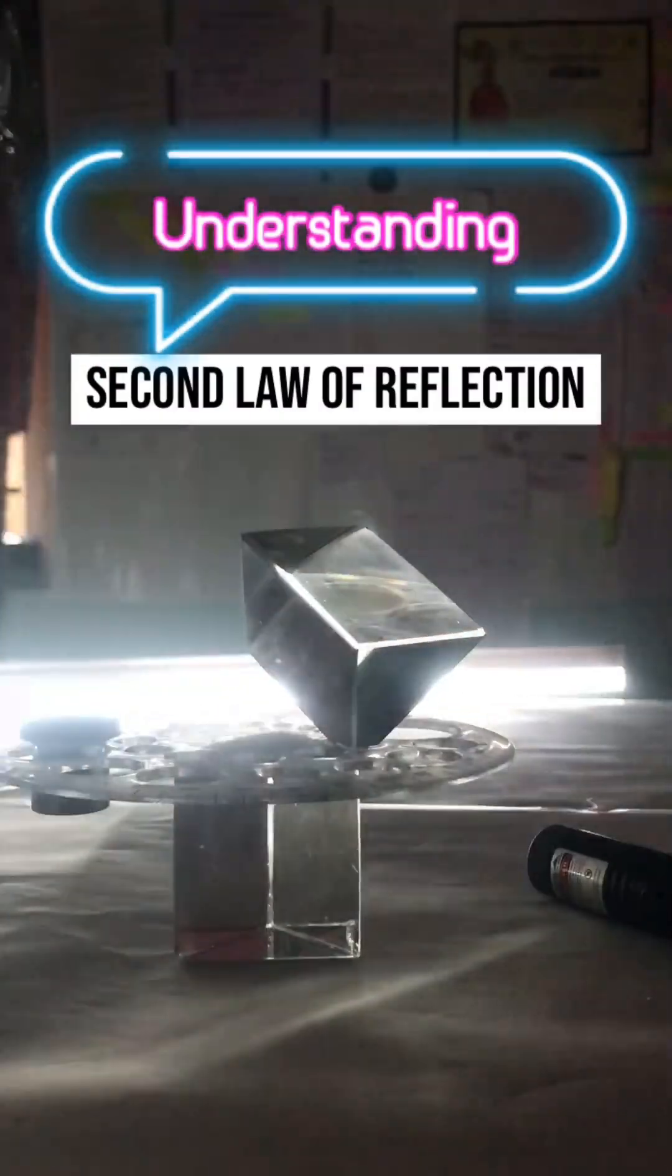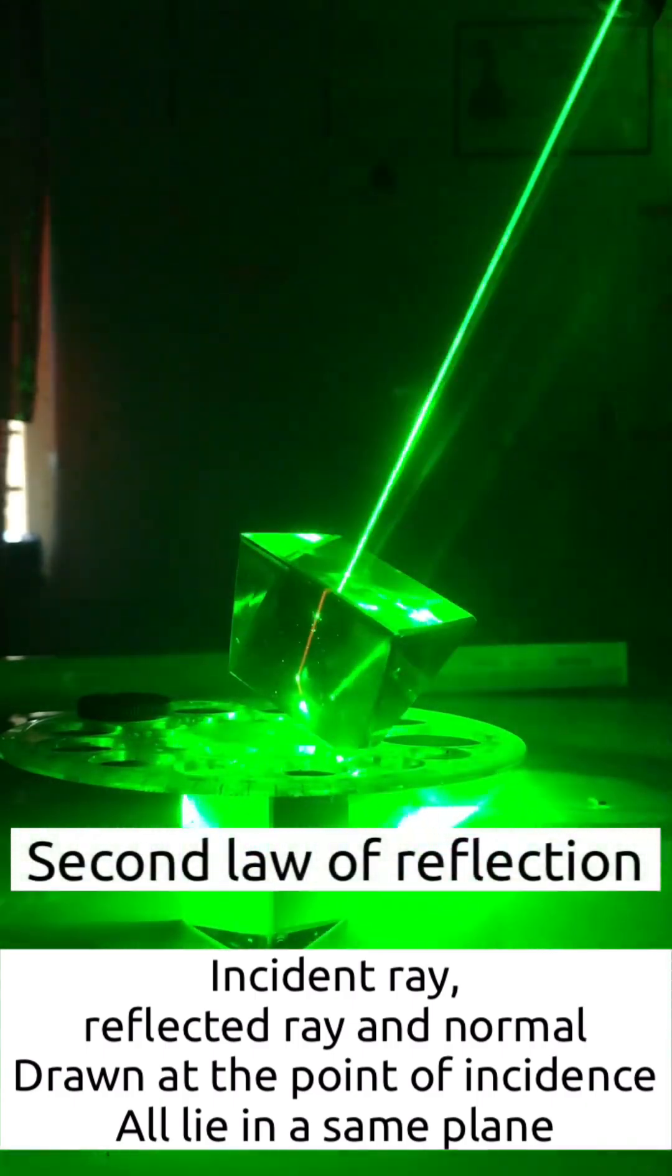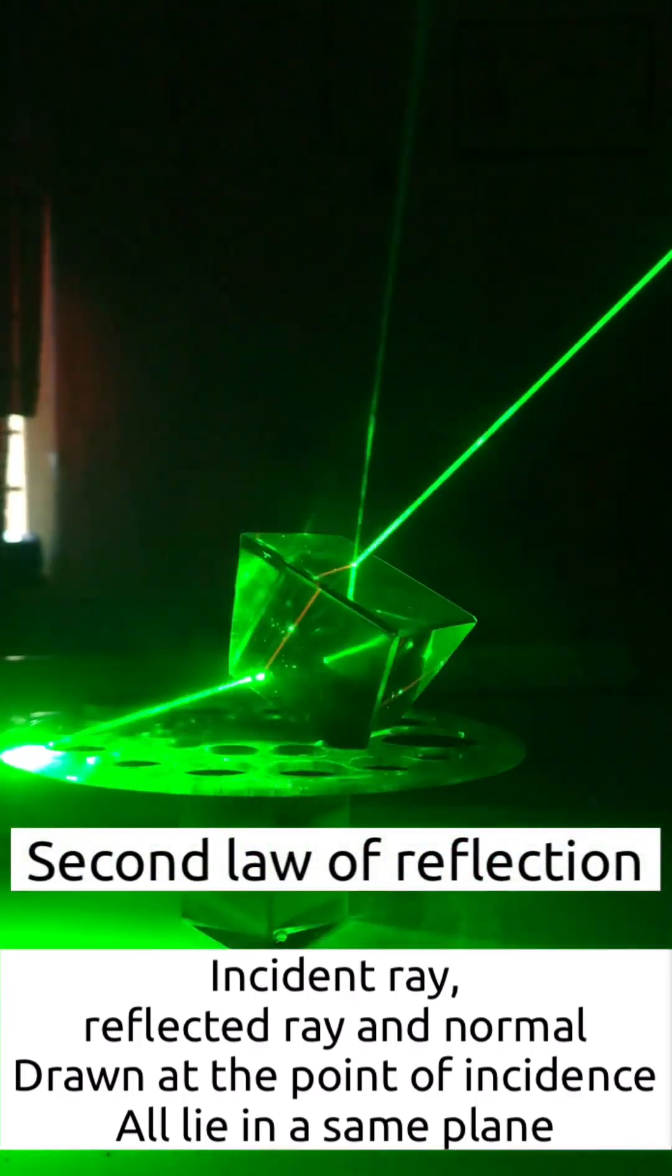Now let us understand the second law of reflection. It states that the incident ray, the reflected ray and the normal drawn at the point of incidence all lie in the same plane.